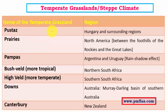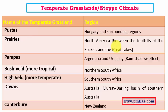The steppe type of climate occurring in the European region is called Pustas, found around Hungary. Prairies are the most famous, occurring in the North American region — mainly Northern USA and Southern Canada — to the east of the Great Lakes region. Pampas is in South America, distributed among Argentina and Uruguay, mainly due to rain shadow effect. Pustas exist because of continentality, whereas prairies exist because of both continentality and rain shadow effect.